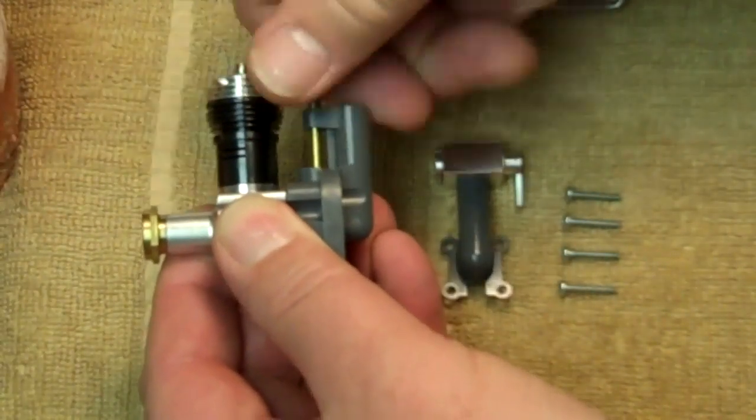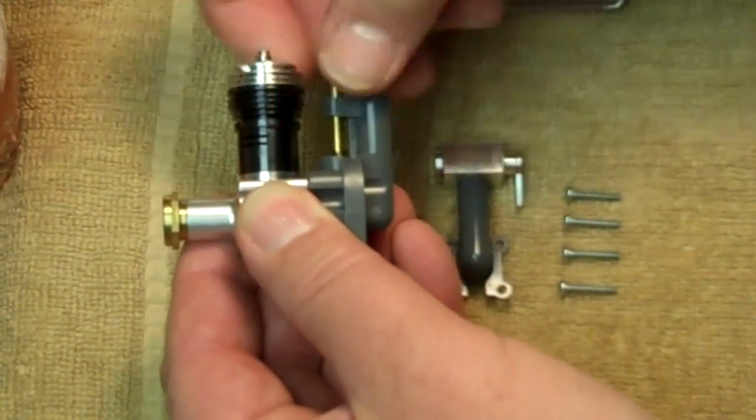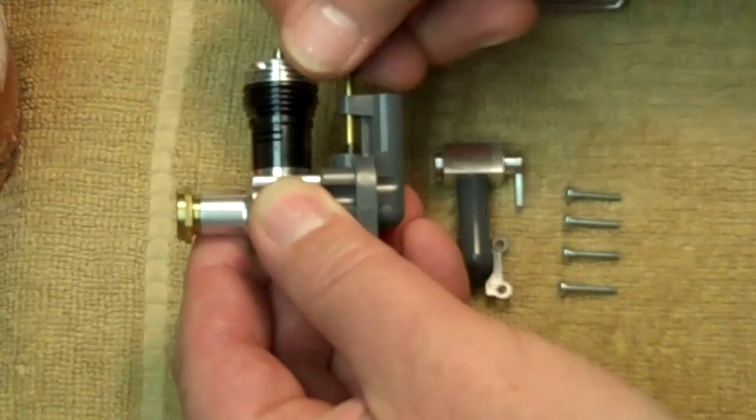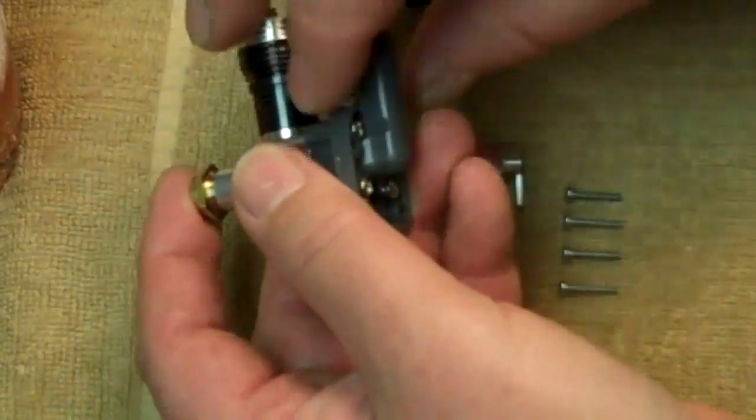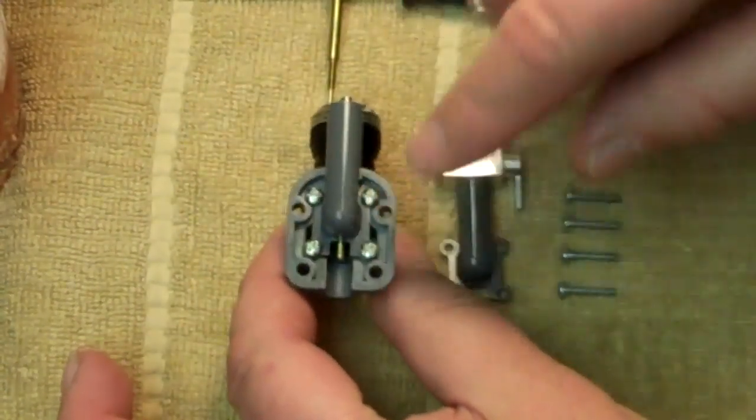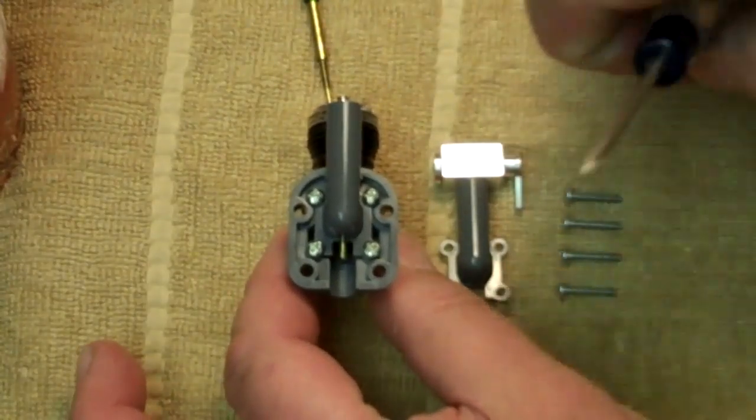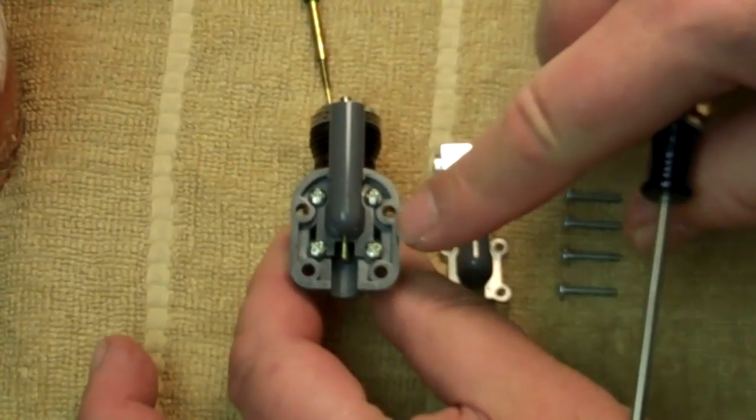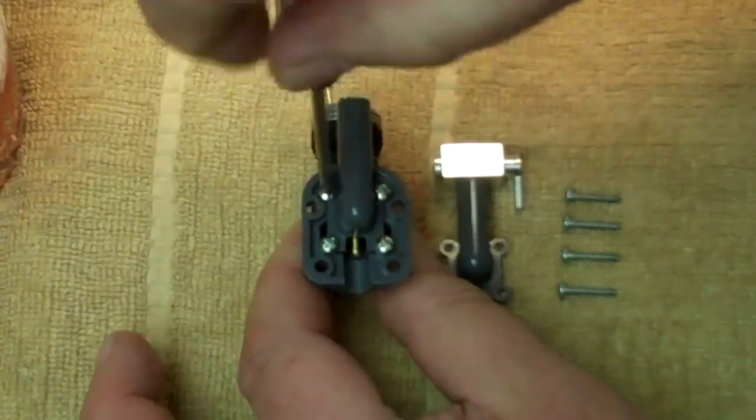So the first thing you want to do is take out your needle valve and I'll just spin it out here. And there are four screws on the back of your engine that go through the choke tube, the back plate, and into the crankcase.